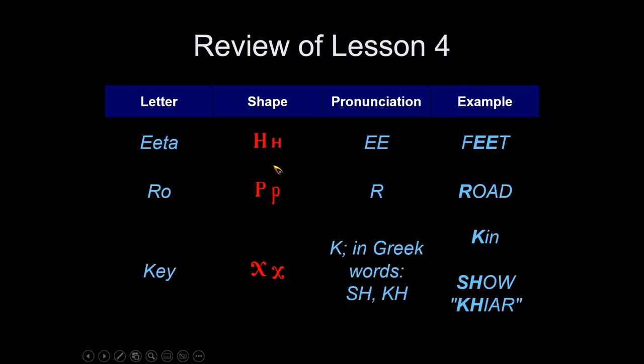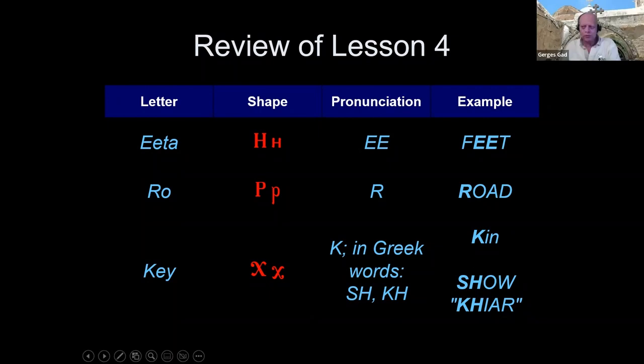Sure. Eta is like double E, Rho is like R, and Ksi is like K or Sh or Kh. Good, thank you.